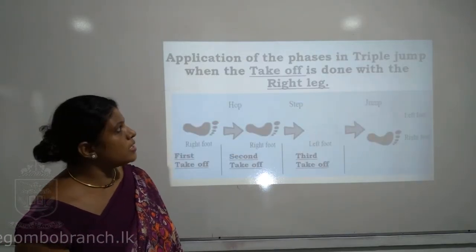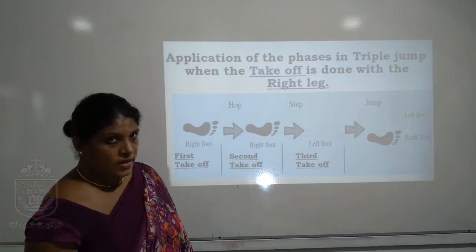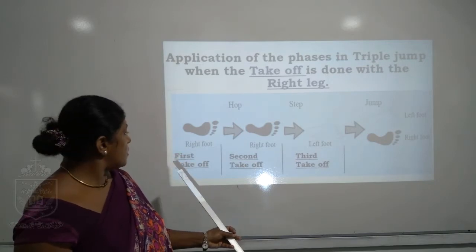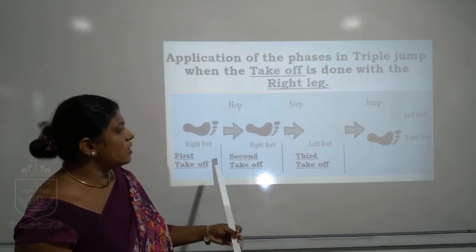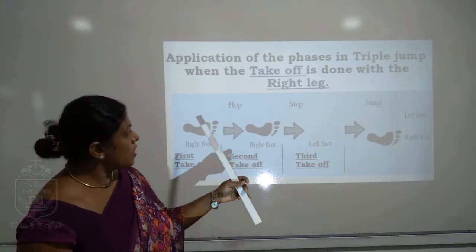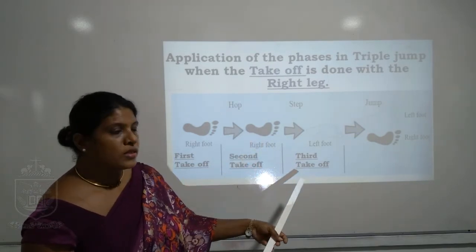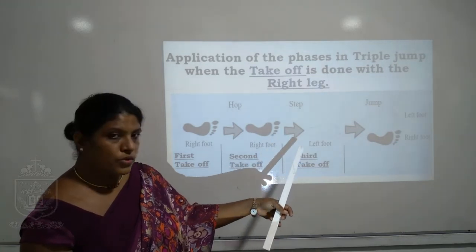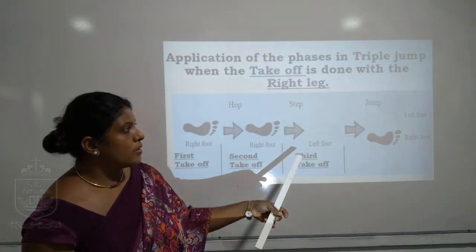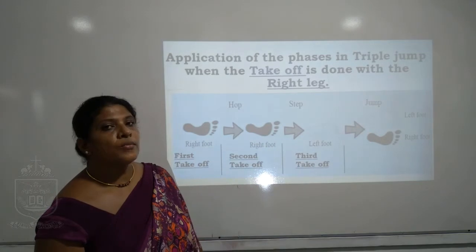Application of the phases in triple jump when the take-off is done with the right leg: first take-off with the right foot, second take-off with the same foot — this covers the hop. Then you move to the third take-off and change your foot to left — that is the step — and finally jumping with both feet.